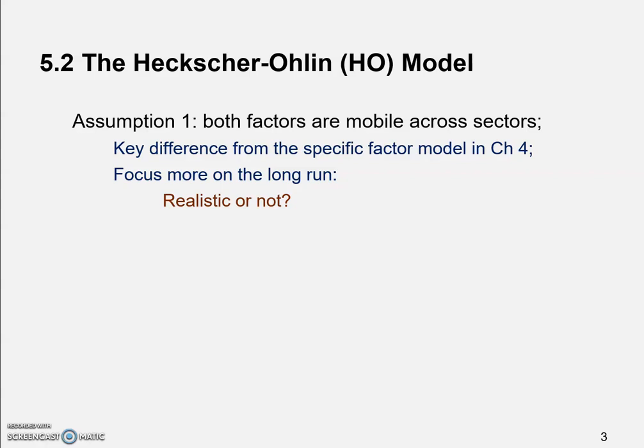How realistic this assumption is, is definitely arguable. Some machinery and equipment would probably never be truly mobile — if it's designed for cloth production, it's hard to convert it for food production. And even for labor, the US economy still has millions of workers who are permanently unemployed — jobless for more than 27 weeks. So you can definitely argue about how realistic this assumption is.